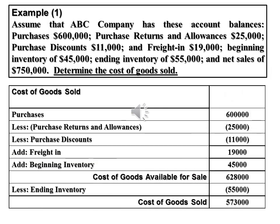Example 1: Assume that ABC Company has the following account balances — Purchases: $600,000; purchase returns and allowances: $25,000; purchase discount: $11,000; freight in: $19,000; beginning inventory: $45,000; ending inventory: $55,000; and net sales: $750,000.